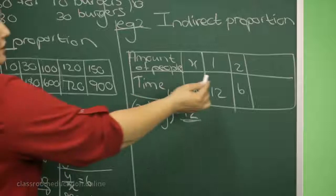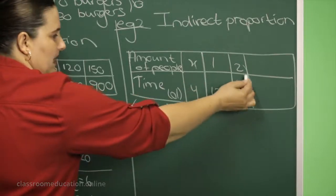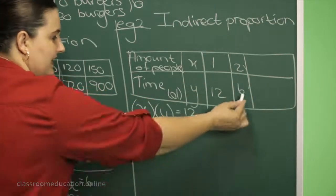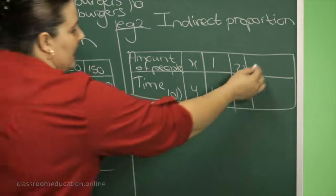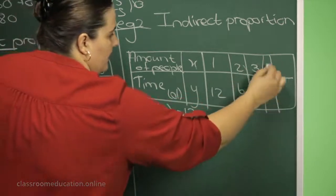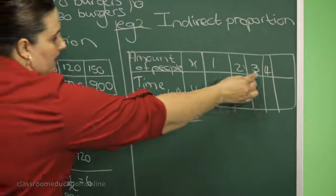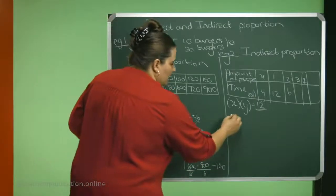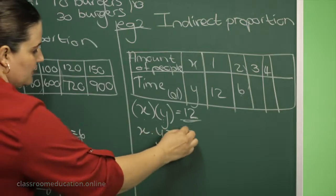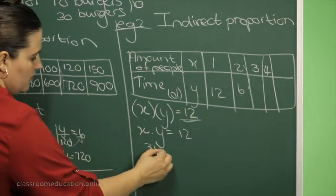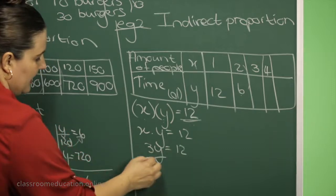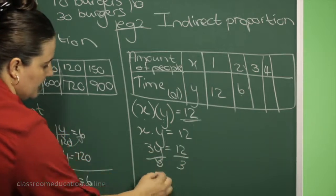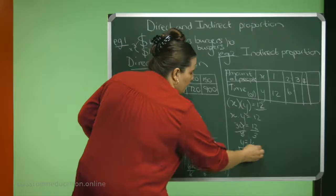So if you are two people, what should I multiply by 2 to get a 12? Six, right? And if you are three people, how long will it take you to paint the house? Let's work it out. So X times Y should be 12, so 3Y should be 12, and I can work it out and say Y equals 4.